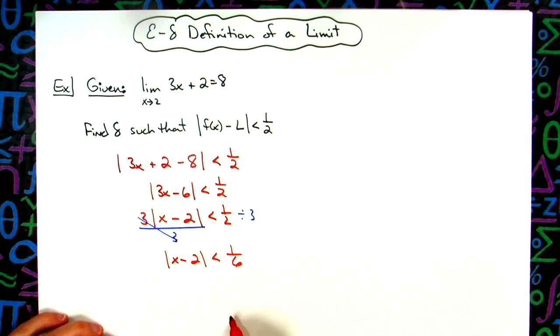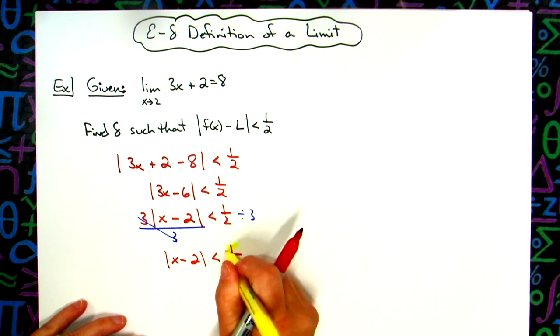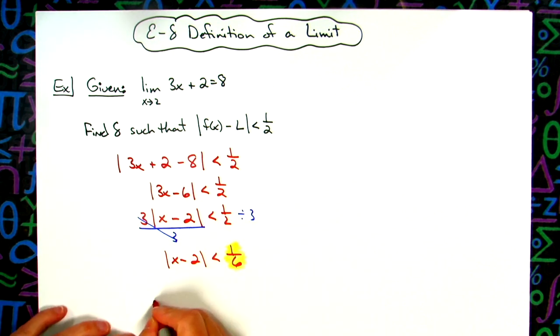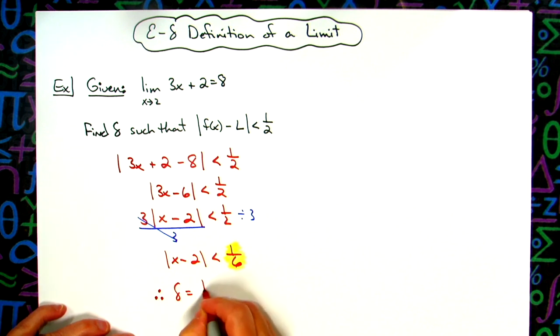Okay, so then that tells me that my delta value is one sixth. So I can conclude, therefore, my delta is equal to one sixth.